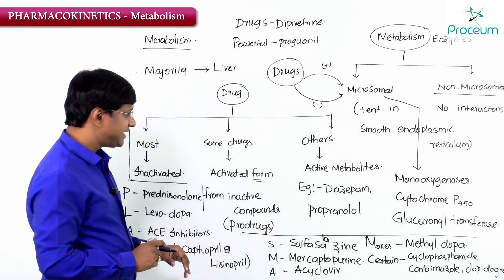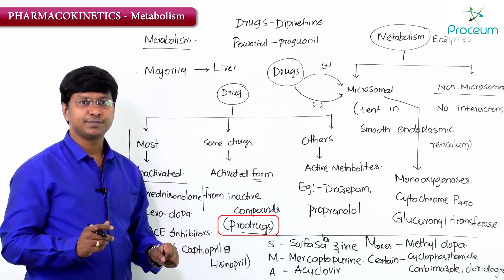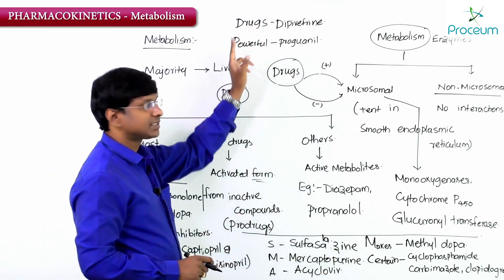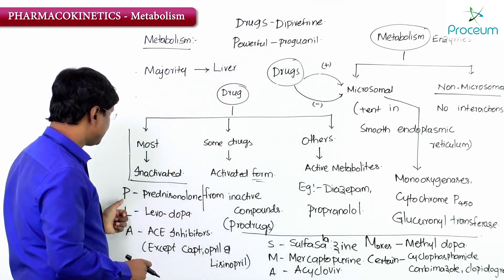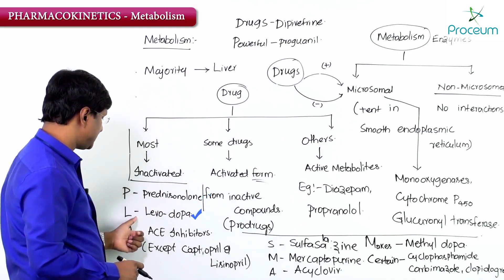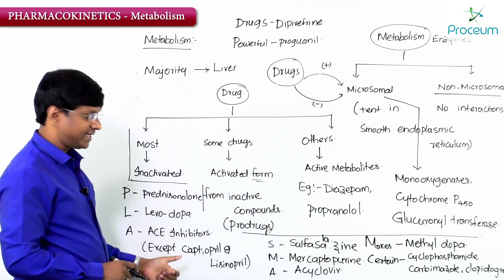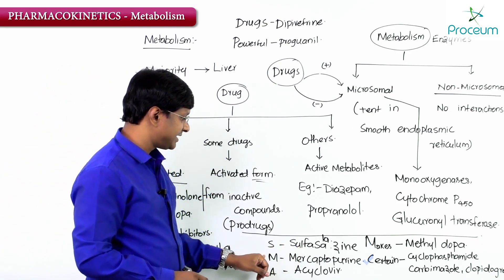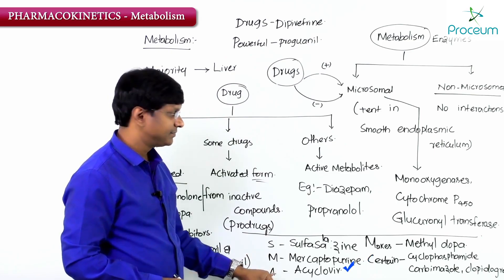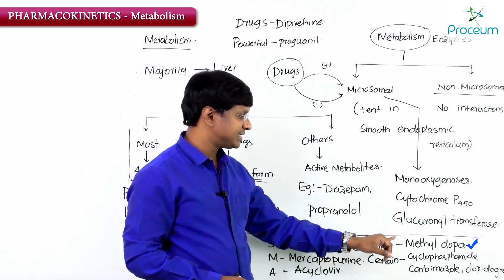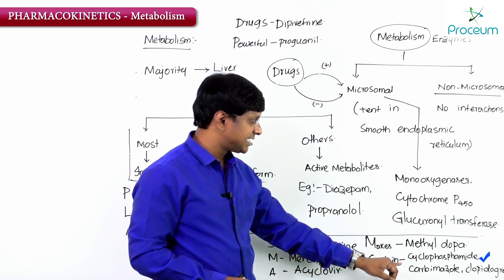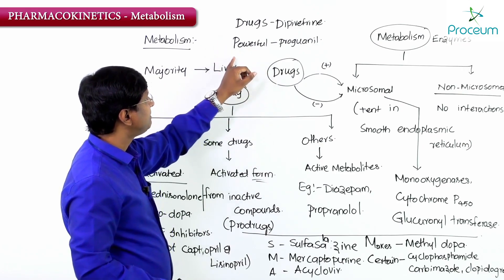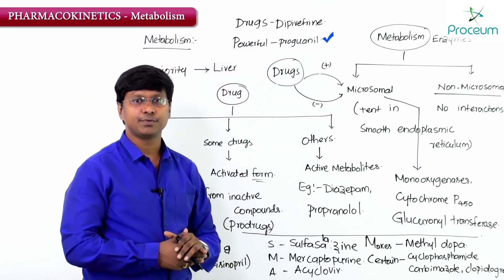The prodrug mnemonic is 'plasma makes certain drugs powerful': P=prednisolone, L=levodopa, A=ACE inhibitors except captopril and lisinopril, S=sulfasalazine, M=mercaptopurine, A=acyclovir, M=methyldopa, C=cyclophosphamide, carbamazole, clopidogrel, D=diprafenine, P=proguanil.